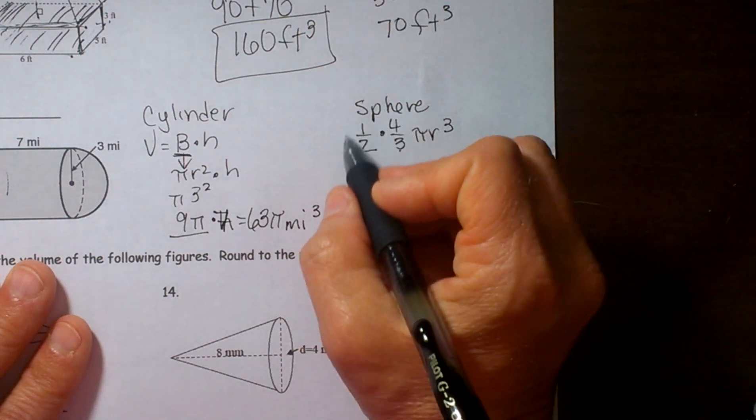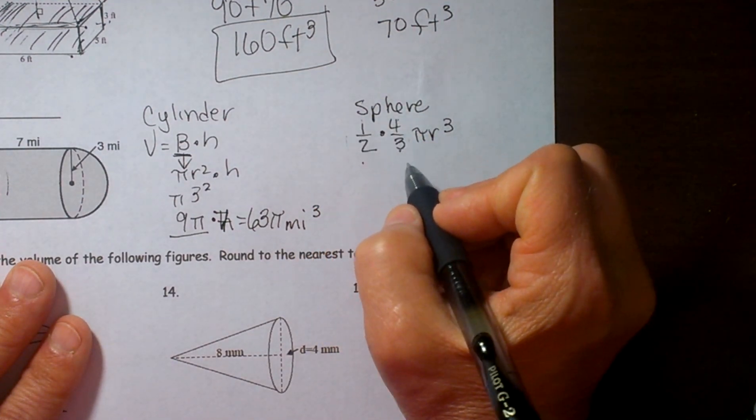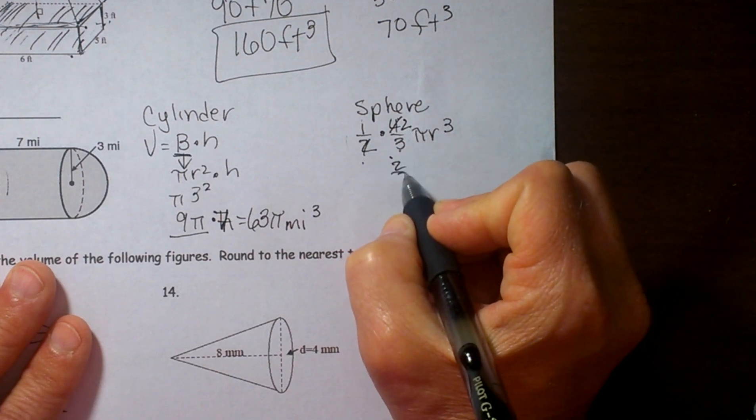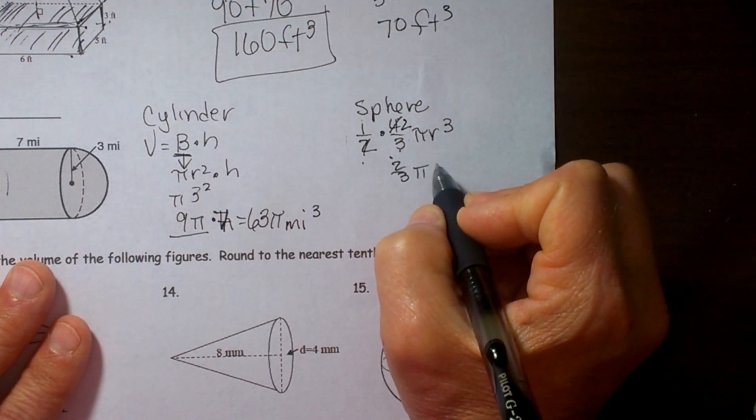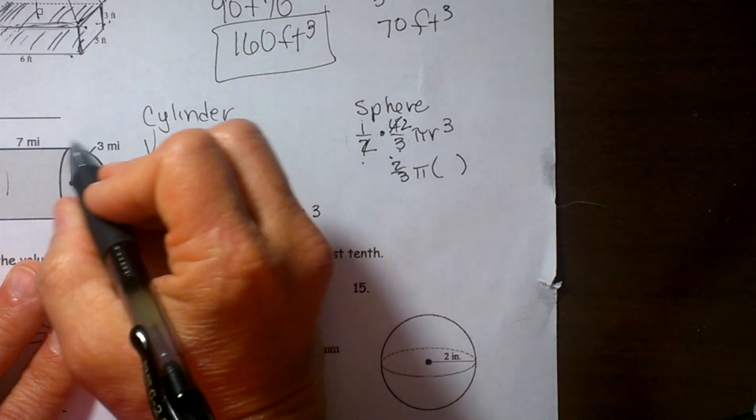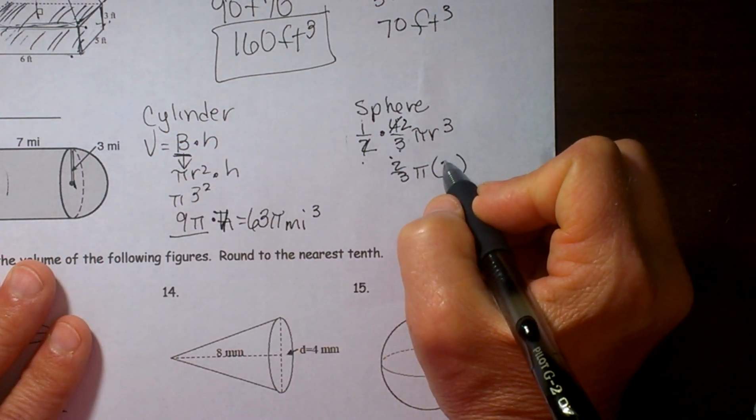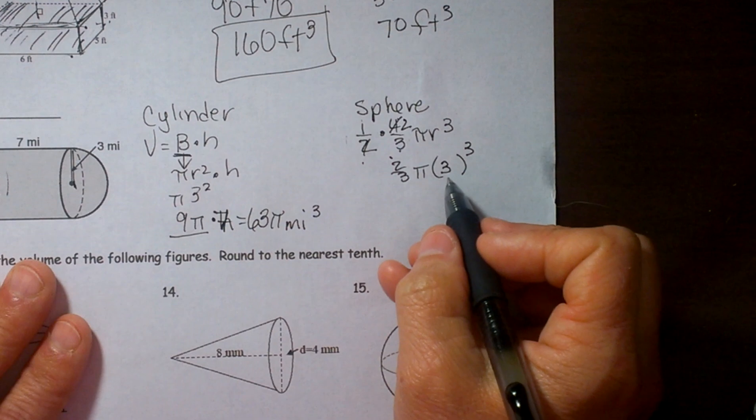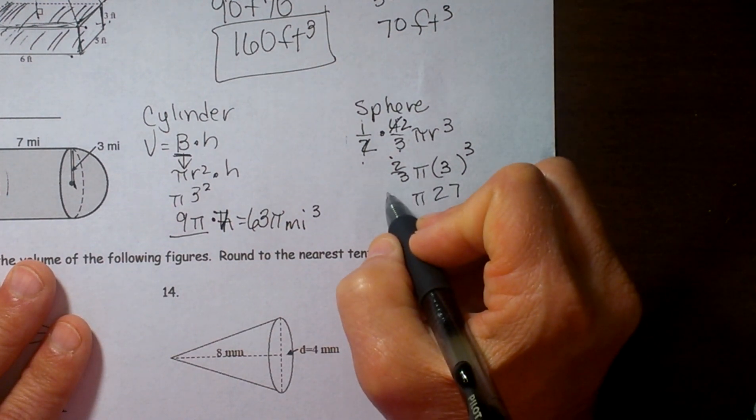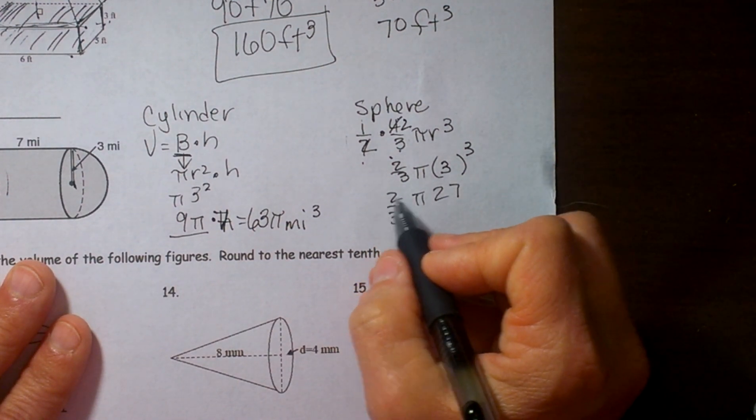So let's simplify this part first. One half of 4 thirds would be 2 thirds. So we are going to take 2 thirds times pi r cubed. Well our radius is the same as the radius of the base of this circle. So let's plug in 3 and cube it. Ok 3 cubed is 27 and we have to multiply that by 2 thirds.